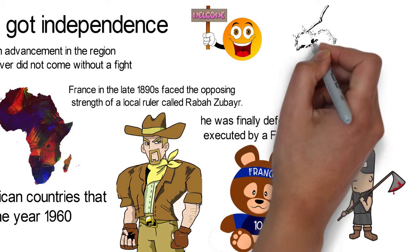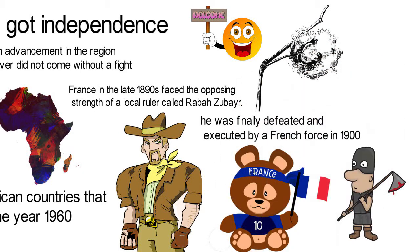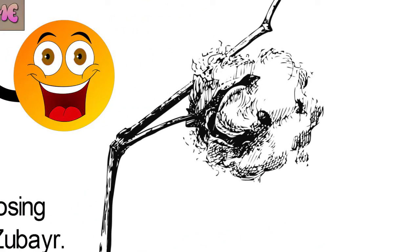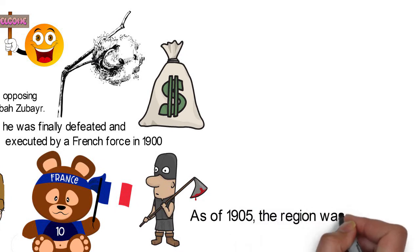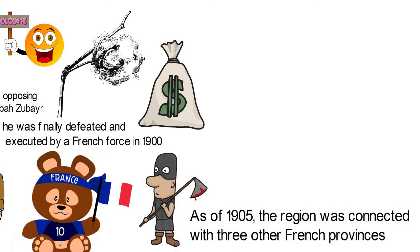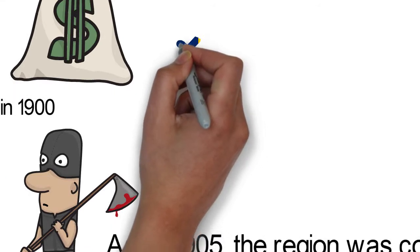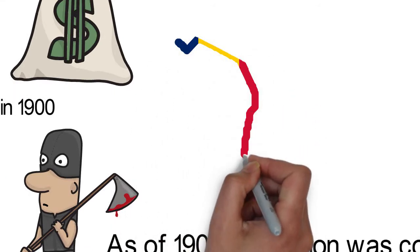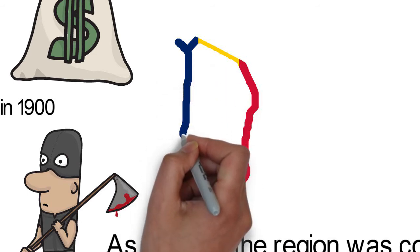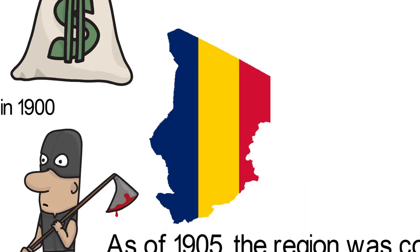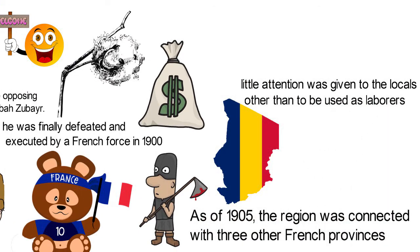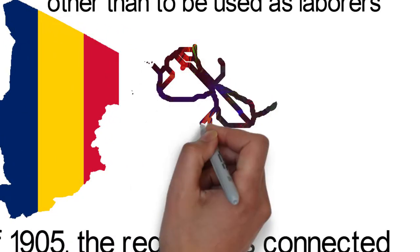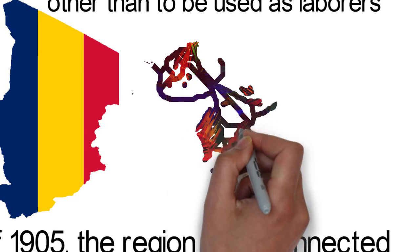With Rabah out of the way, France was free to pursue its interests in the Chad region. The primary interest of France in the region was the cultivation and exportation of cotton and its financial gains. As of 1905, the region was connected with three other French provinces: Ubangi-Chari, now called the Central African Republic, Moyen-Congo, and Gabon. Of the four, Chad was the least favored and most ignored. Very little attention was given to the locals other than to be used as French laborers. A governor-general ruled the four areas, collectively known as French Equatorial Africa.